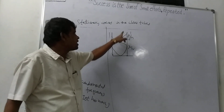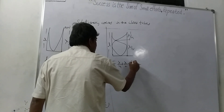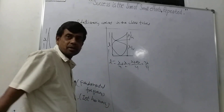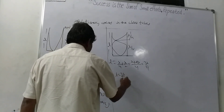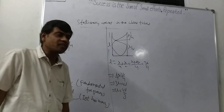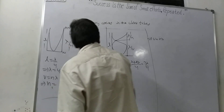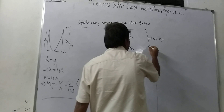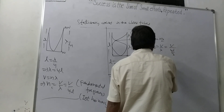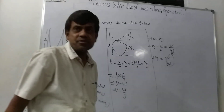Here we are dividing: this portion is lambda by 2 and this is lambda by 4, giving total length L equals lambda by 4 plus lambda by 2 equals 3 lambda by 4. So lambda equals 4L by 3. Using V equals n lambda, the second resonance frequency N2 equals V by lambda equals 3V by 4L. Since V by 4L is N1, N2 equals 3 N1. That is called the third harmonic.